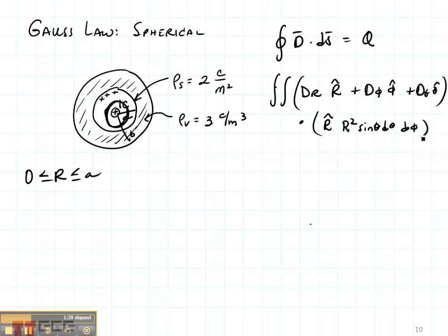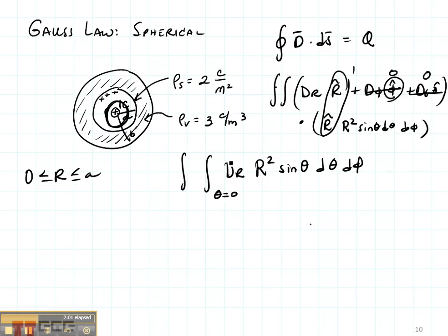Now let's do this dot product. If we dot r with r, we get 1. If we dot r with φ, we get 0. And if we dot r with θ, we get 0. So we're going to have an integral here of dr, r², sine of θ, dθ, dφ. Here θ is going to go from 0 to π and φ is going to go from 0 to 2π as the conventions of the spherical coordinate system would tell us.